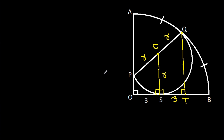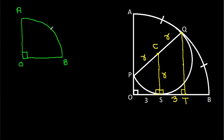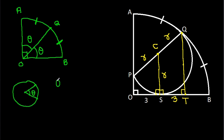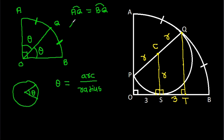Now, in the arc AOB, point Q lies on the arc, and we have arc AQ equal to arc BQ. Since in any circle the angle equals arc over radius, equal arcs give equal angles. So angle AOQ equals angle BOQ. Since the total angle AOB is 90°, each is 90°/2 = 45°.